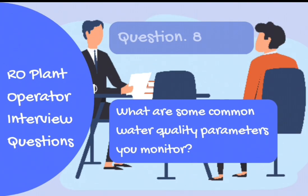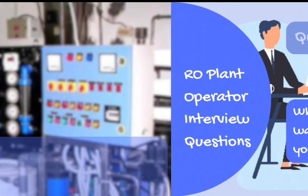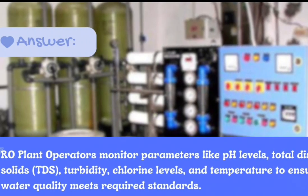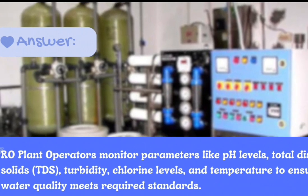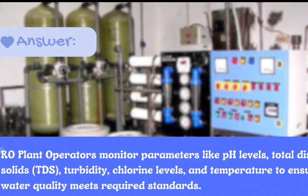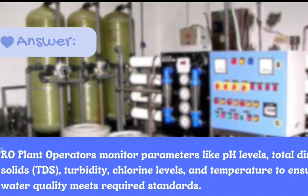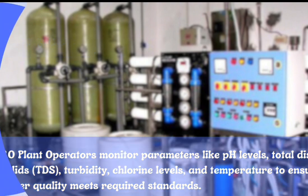Question number 8: What are some common water quality parameters you monitor? Answer: RO plant operators monitor parameters like pH levels, total dissolved solids (TDS), turbidity, chlorine levels, and temperature to ensure water quality meets required standards.